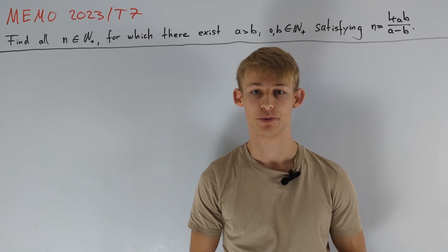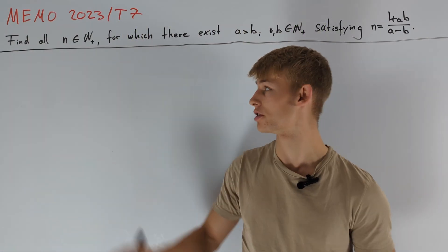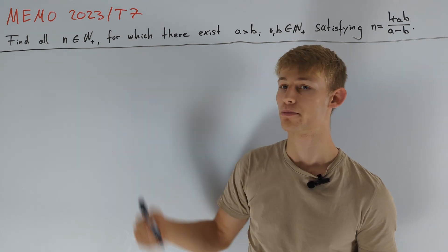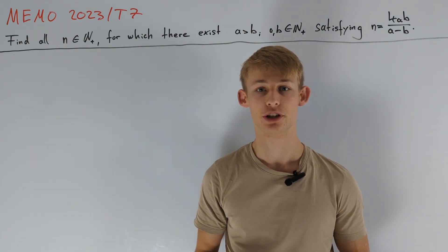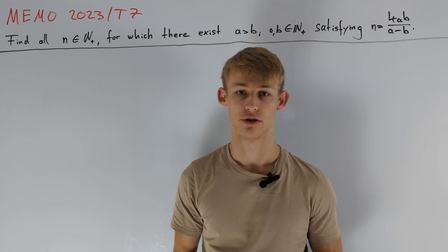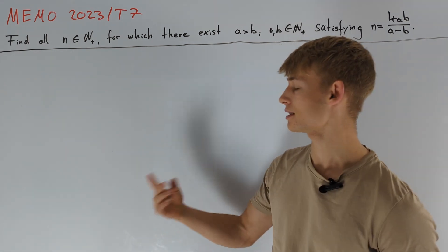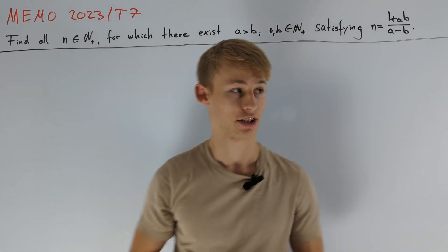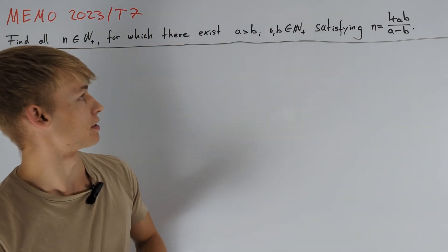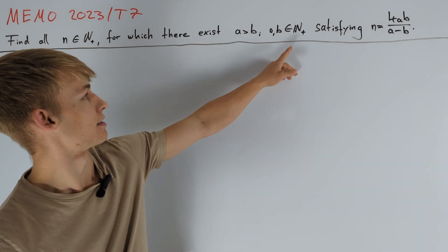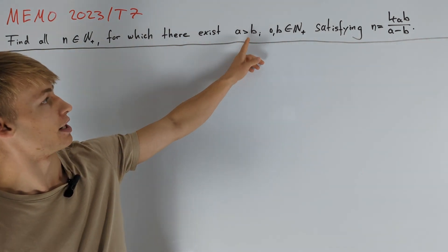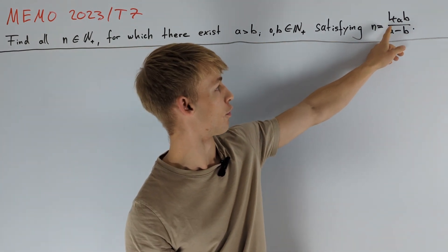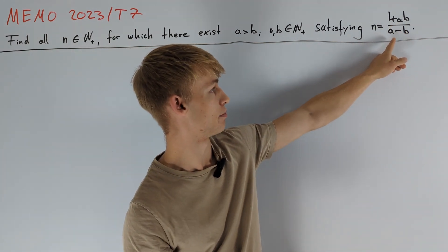Hey guys! Today I want to present a solution to the Middle European Math Olympiad 2023 problem T7. First, let's have a look at the problem statement. We are asked to find all positive integers n such that we can find positive integers a and b satisfying a greater than b and n equals 4ab divided by a minus b.